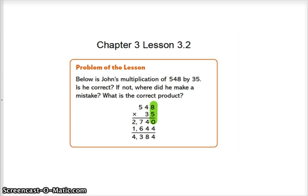First we're going to start in our ones place. 8 times 5 equals 40. So we put our 0 down and carry the 4 into our tens place.